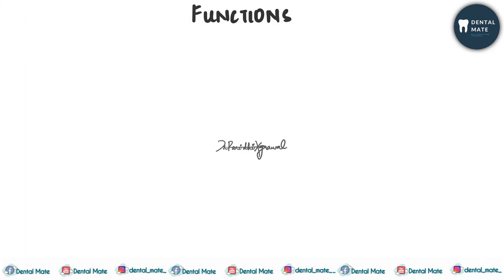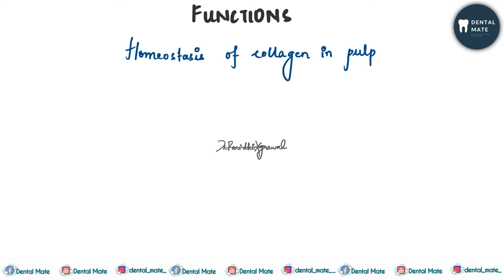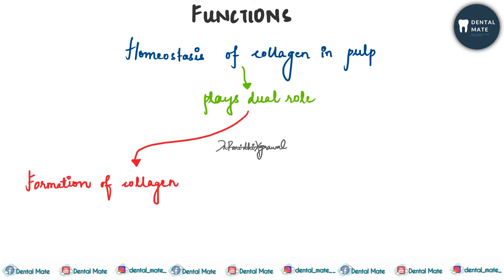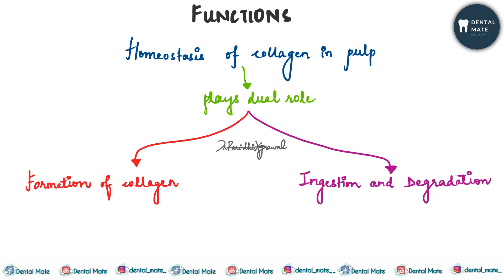Now talking about the functions of fibroblasts. Their first function is the homeostasis of collagen in the pulp. While performing this homeostasis of collagen they play a dual role: formation of collagen and other ground substance, and ingestion and degradation of the same matrix. The formation of collagen can be intracellular or extracellular.